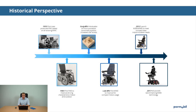By then, the mid wheel driven platforms were focusing on indoor use and were not usable outdoors. In the 90s and early 2000s, a lot of manufacturers developed new products. In 2012, Permobile came on the market with their first indoor-outdoor mid wheel driven platform, the M300 and the M400.